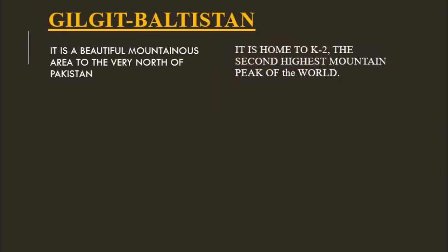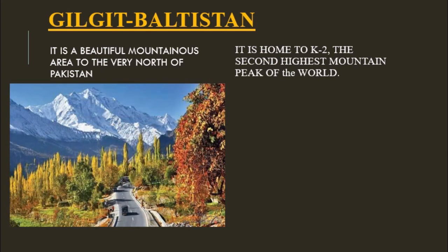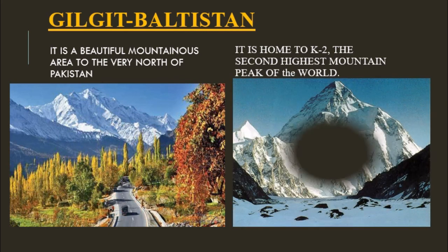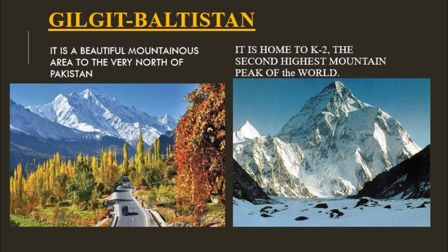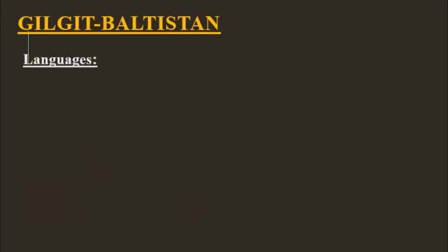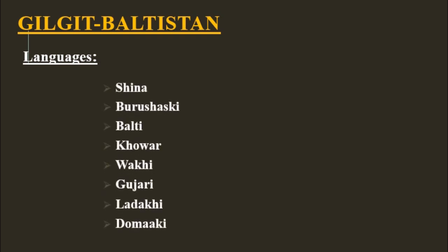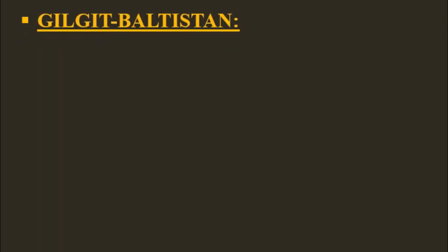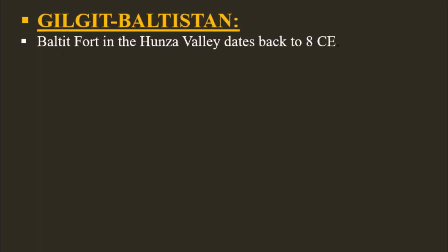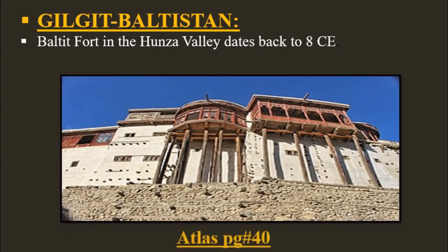Gilgit Baltistan is a beautiful mountainous area to the very north of Pakistan. It is home to K2, the second highest mountain peak in the world. People in this region speak many different languages including Shina, Burushaski, Balti, Khowar, Wakhi, Gujari, Ladakhi, and Domaki. The Baltit Fort in the Hunza Valley dates back to the 8th century. You can find more details about Gilgit Baltistan in the 'Beyond the Land' section on page 40 of the atlas book.